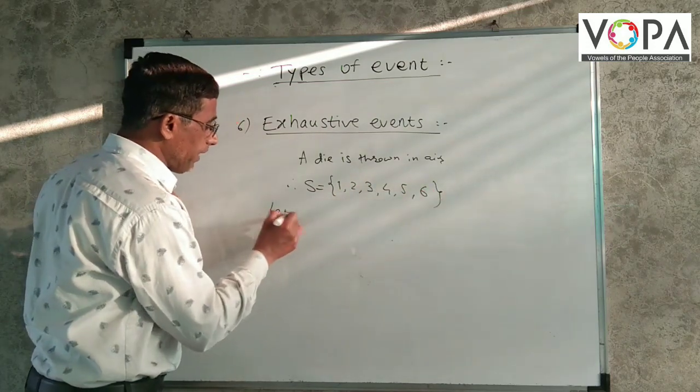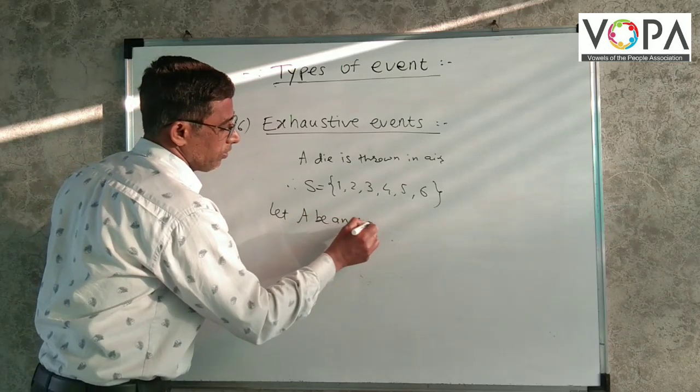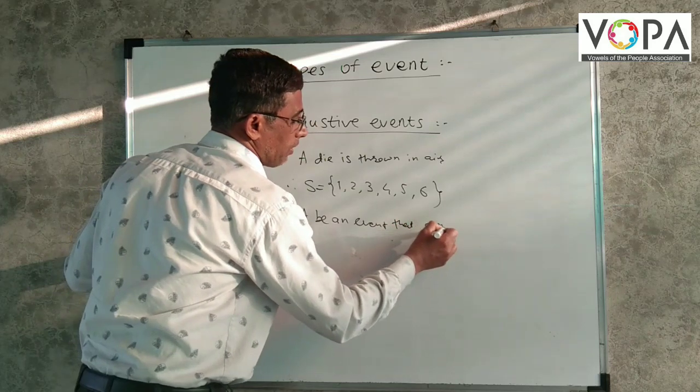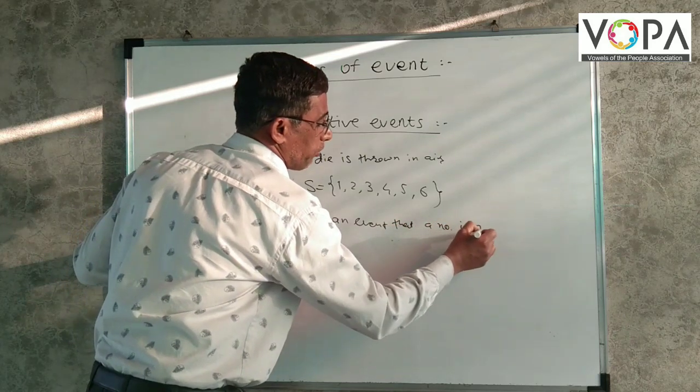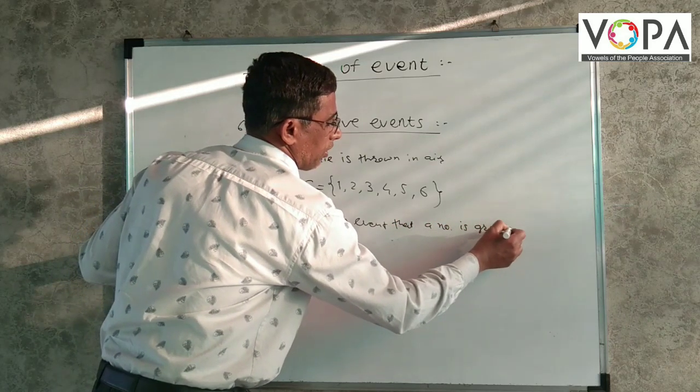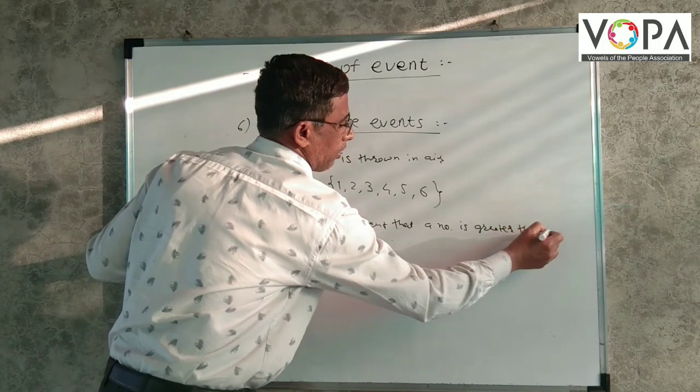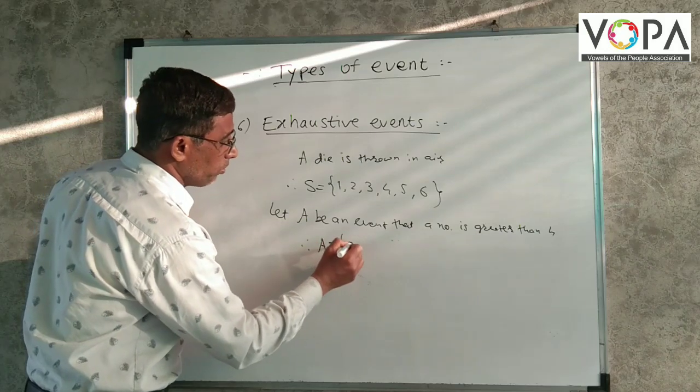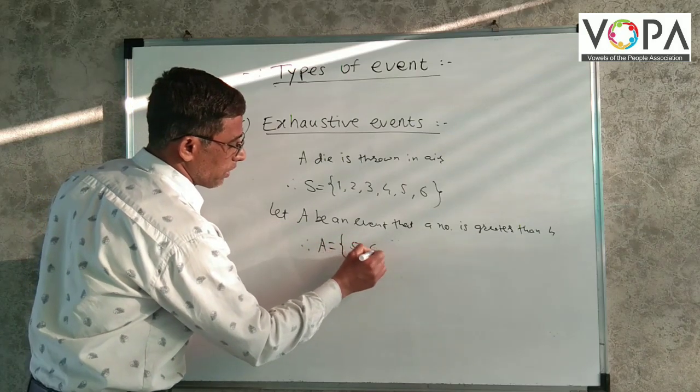Let A be an event that a number is greater than 4. Then, what we get? A is equal to (5, 6).